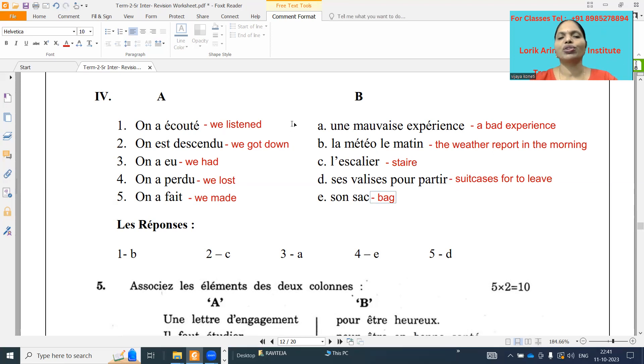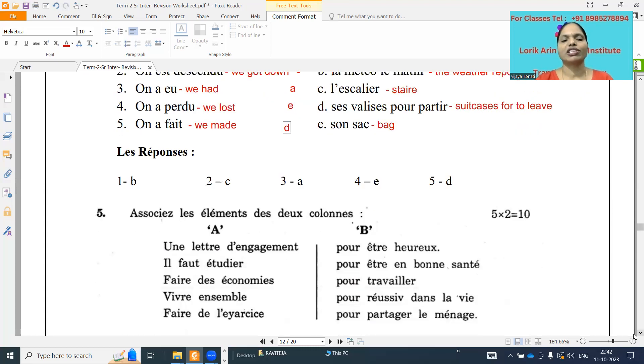Now means what it is. On a écouté la météo. We listened the weather report in the morning. On a descendu. We got down the stairs. It is l'escalier, C it is. And on a eu, we had une mauvaise expérience, a bad experience. On a perdu, we lost bag, what it is, A it is. On a fait means what, we packed suitcase, ces valises pour partir, suitcases. Okay.